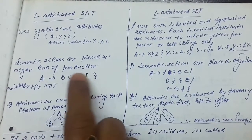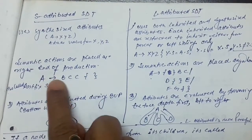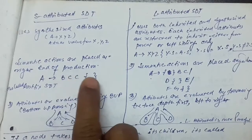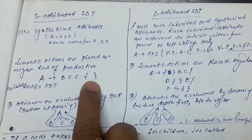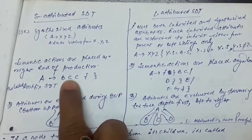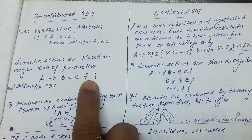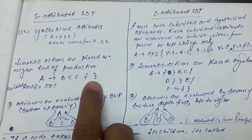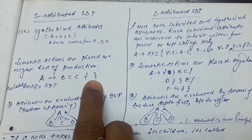In all the examples we have taken so far, the semantic action is placed at the end of the production only. Since the semantic rules are applied at the last, we say that this is a post-fix SDT.